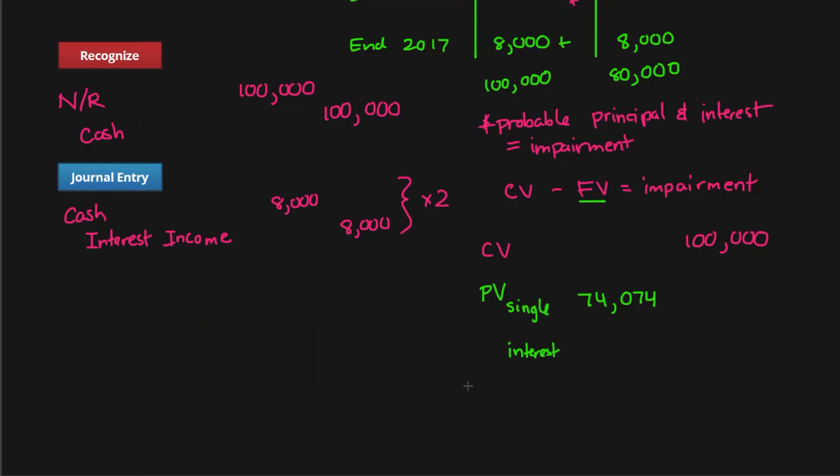The second part is we have to find the present value of the interest that's remaining. I'm going to stick to the annuity formula since we're normally using that for interest. We're going to sub in $8,000 as the cash payment. The effective rate is 8%, and the term that remains is one year. When we sub all of that in, you're going to get $7,407. The sum of these two will be the fair value of our expected note, which is $81,481. The difference between what's on our books and what it's worth at the moment is the impairment charge, which is $18,519.